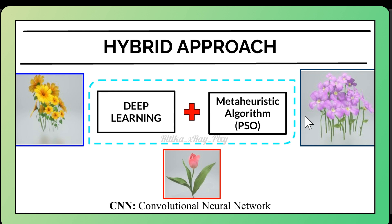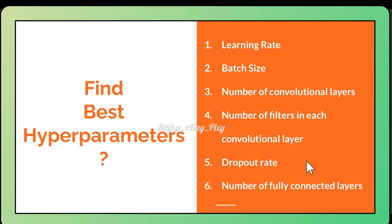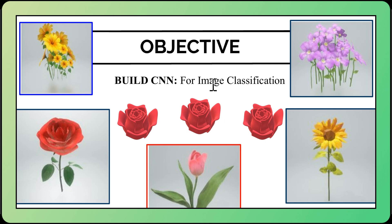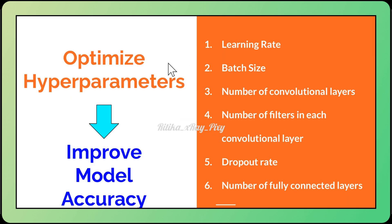We will identify different types of flowers from images. Our goal is to find the best hyper parameters to maximize the model's accuracy. The objective is clear: we want to build a CNN to classify images of flowers into different categories and optimize the hyper parameters of the CNN to improve classification accuracy.